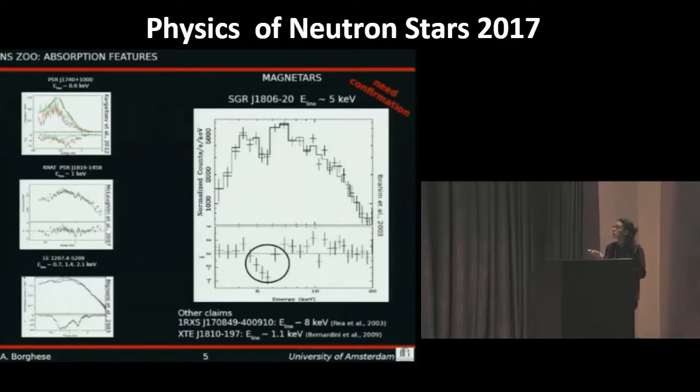So here we have few claims like the soft gamma ray repeaters J1806 or the anomalous X-ray pulsar J1708 and the transient magnetar J1810. But these claims need to be confirmed by future observation.